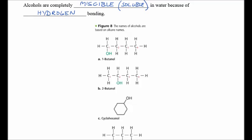The names of the alcohols are based on the alkane name. Here we have butane, but because there is a hydroxyl group, we call it 1-butanol. 2-butanol, because it is on the second carbon.